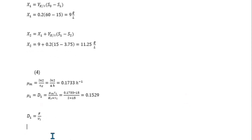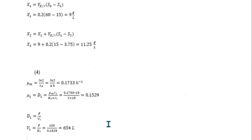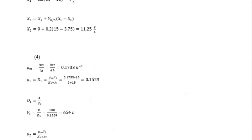We know the dilution factor D = F / V. Since F and D1 are both known, we rearrange to solve for V1. Substituting F = 100 liters per hour and D1 = 0.1529 per hour gives V1 = 654 liters.